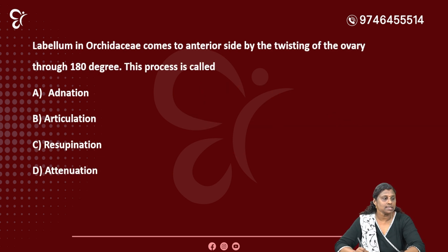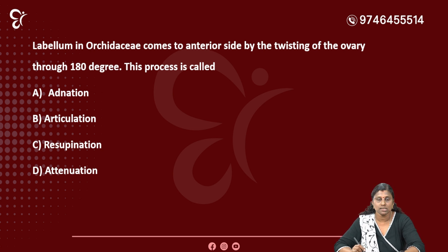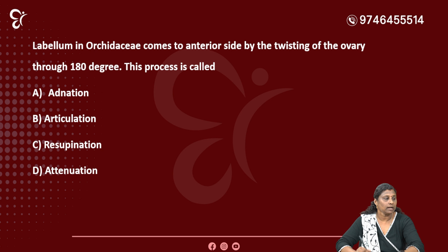Labellum in Orchidaceae comes to the anterior side by twisting of the ovary through 180 degrees. This process is called — Option A: Adnation, Option B: Articulation, Option C: Resupination, Option D: Attenuation. The correct option is Resupination.